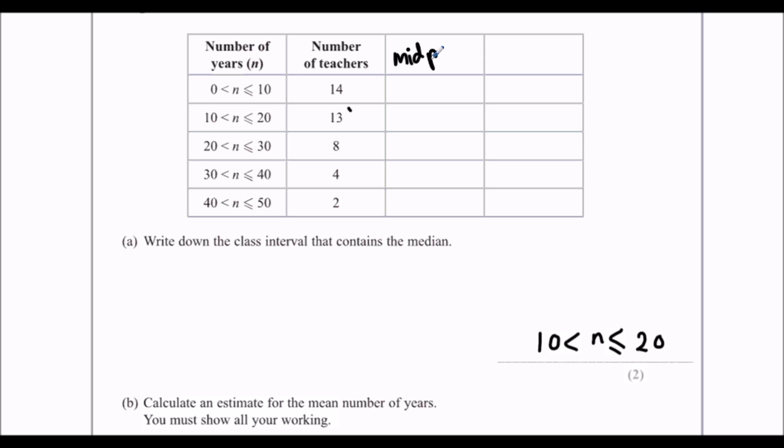The best guess you can have is the midpoint. So we're going to estimate that these 14 teachers have taught for 5 years. These 13, the middle again, the middle of 10 and 20 is 15. The middle of 20 and 30 is 25. 30 and 40, so 35. And 40 and 50, so 45.